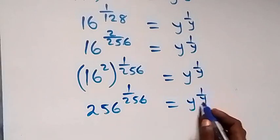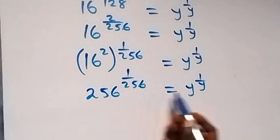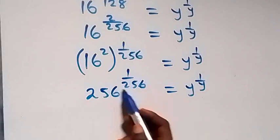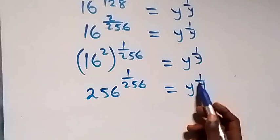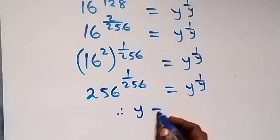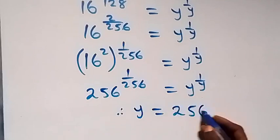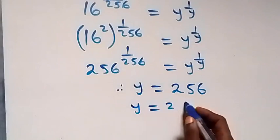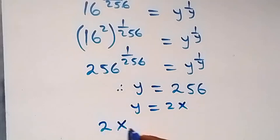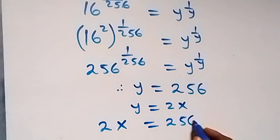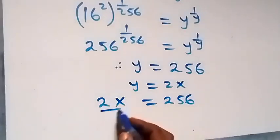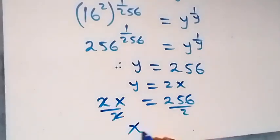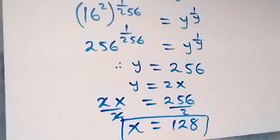From here, when we compare this side with this side, the same number is the same coefficient of the power, and y here is the same as y here. So we can say therefore y equals to 256. Recall that we represented y as 2x, so 2x equals to 256. Divide both sides by 2 and we have x equals to 128.